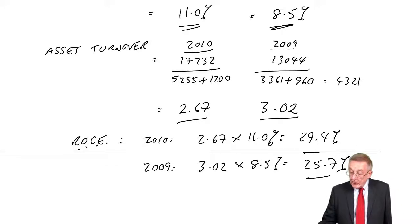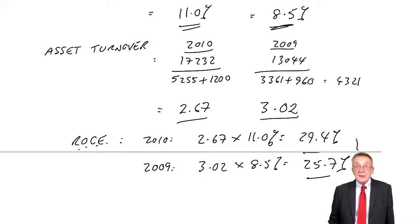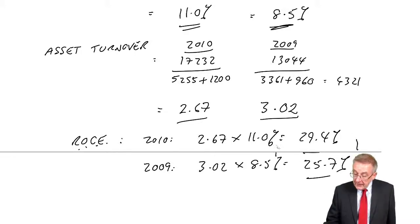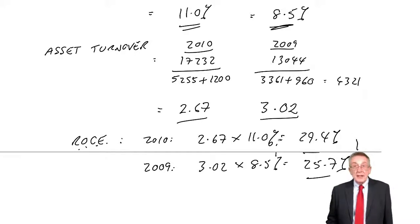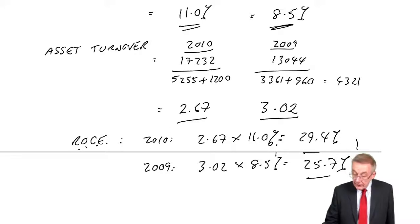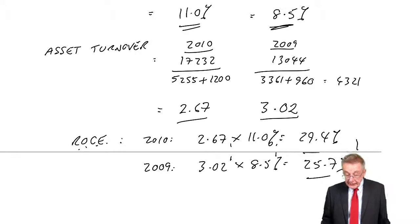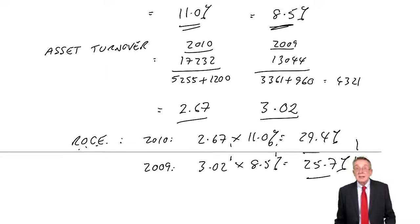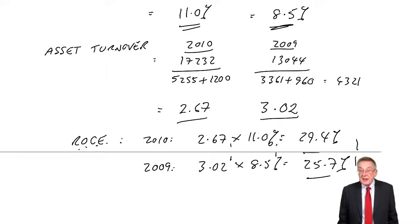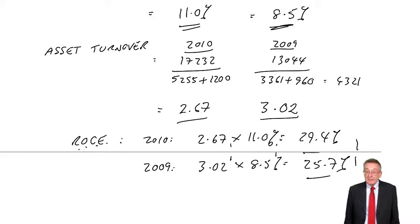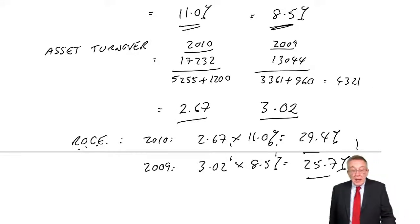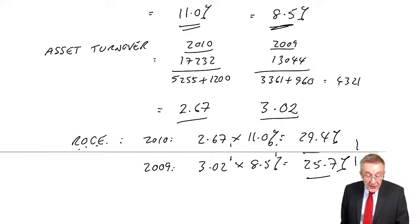As I was saying, you always want return on capital to increase, and you're looking at increasing the net profit margin and, in general, looking to increase the asset turnover. Those are the three most important profitability ratios.